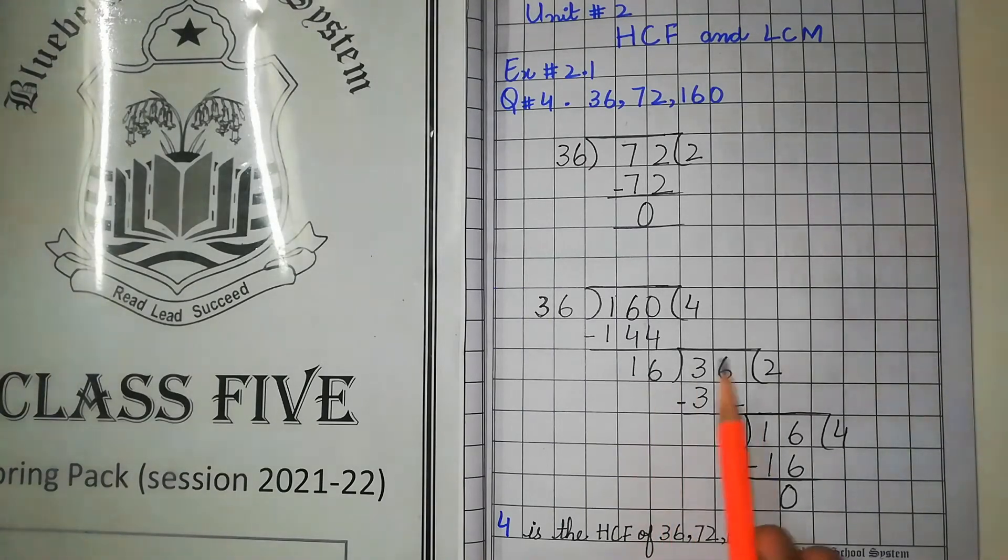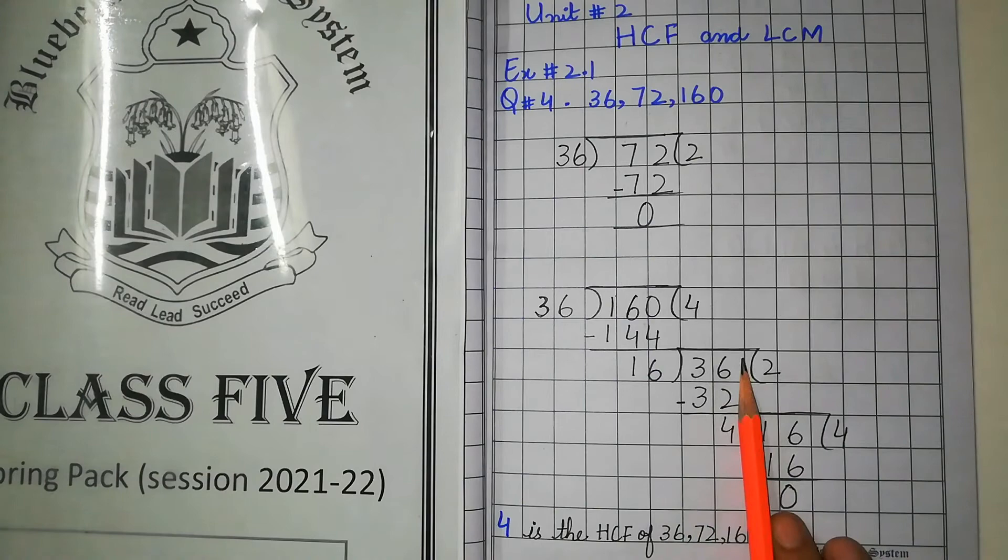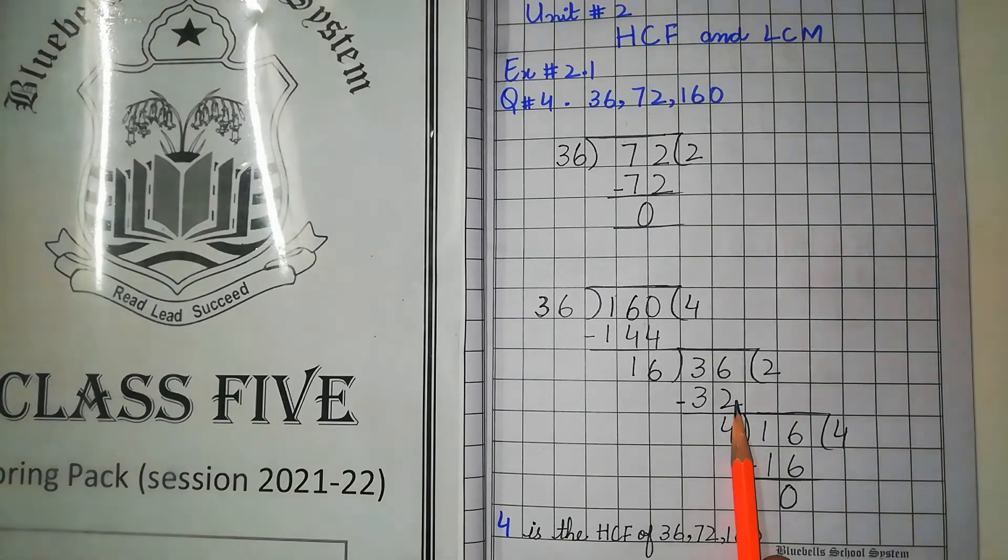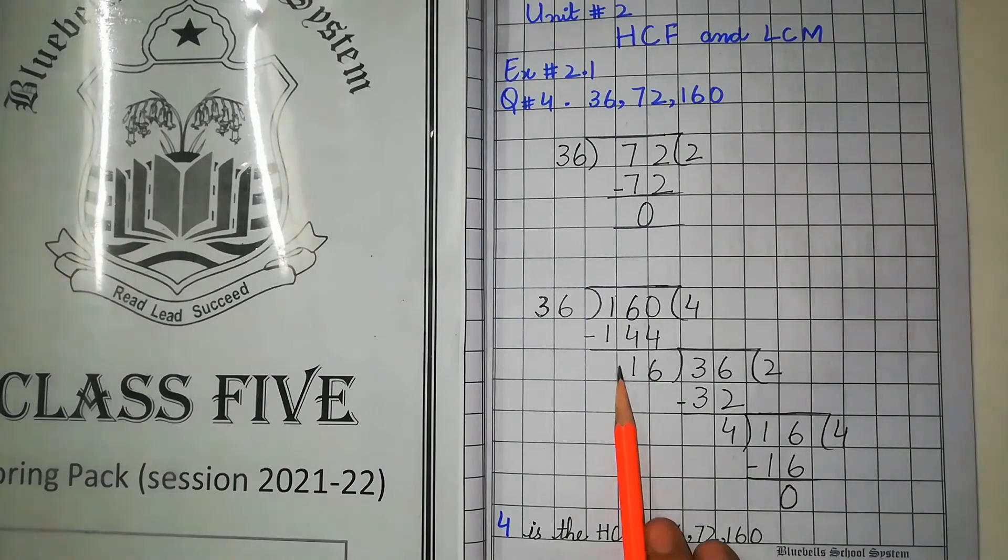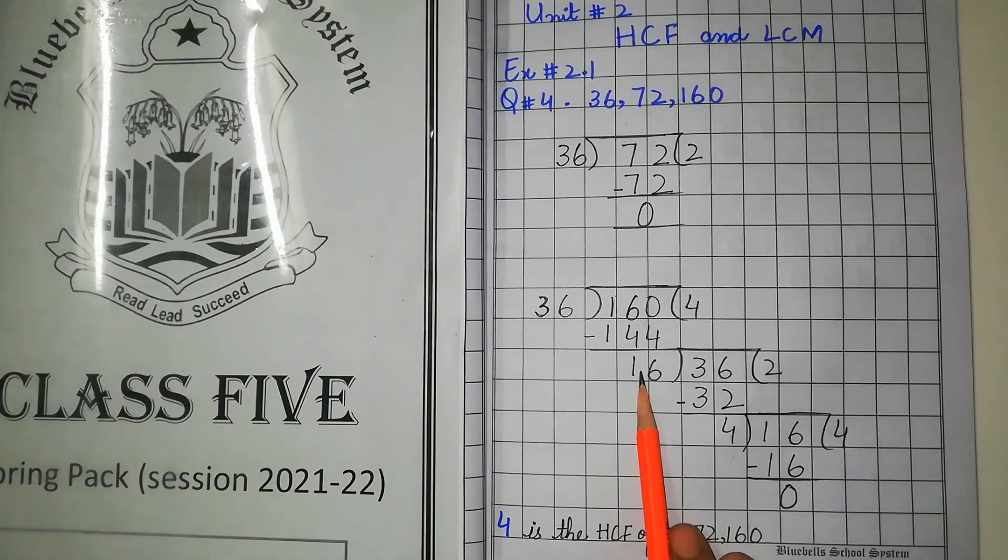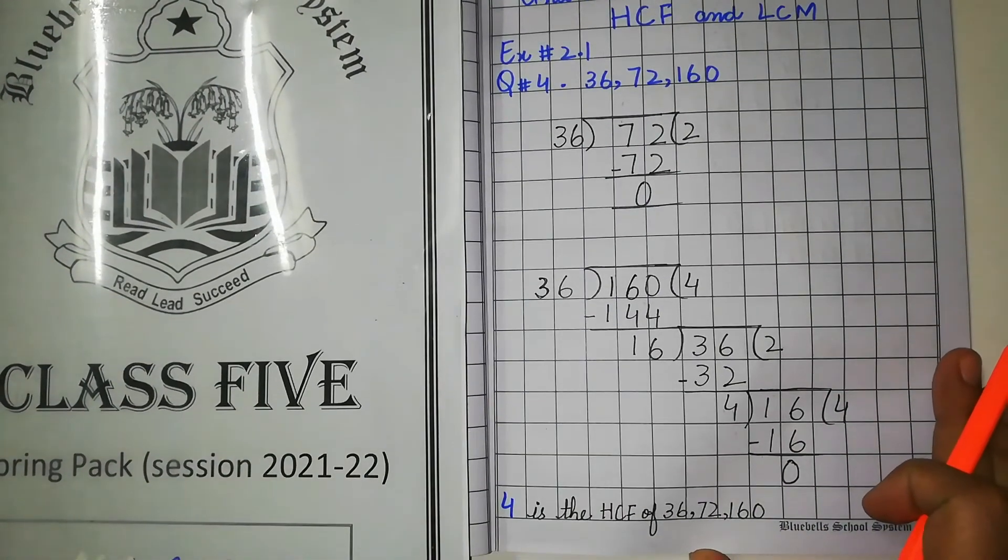16 twos are 32 and 36. From 32 minus the answer is 4. Now 4 here is divisor and dividend which is our first divisor 16. We will read the table from 4. 4 fours are 16. We have 16 to minus, the remainder 0.